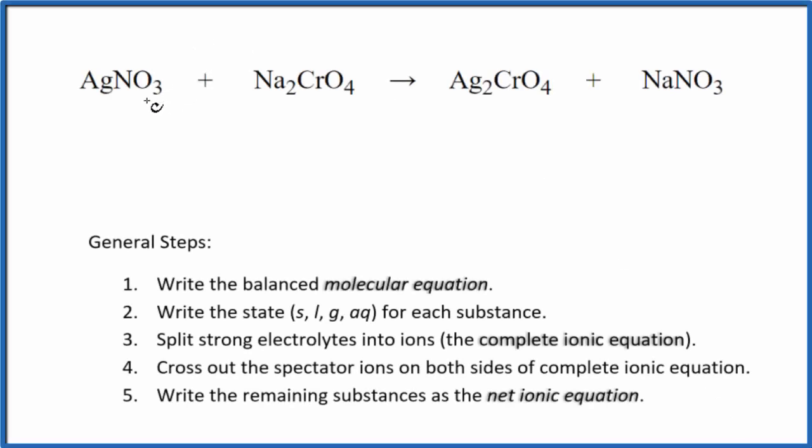In this video, we'll write the balanced net ionic equation for AgNO3 plus Na2CrO4. This is silver nitrate plus sodium chromate. The first thing we need to do when we write net ionic equations, we need to balance the molecular equation. This is the molecular equation.